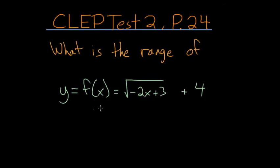What is the range of f(x) = √(-2x+3) + 4?